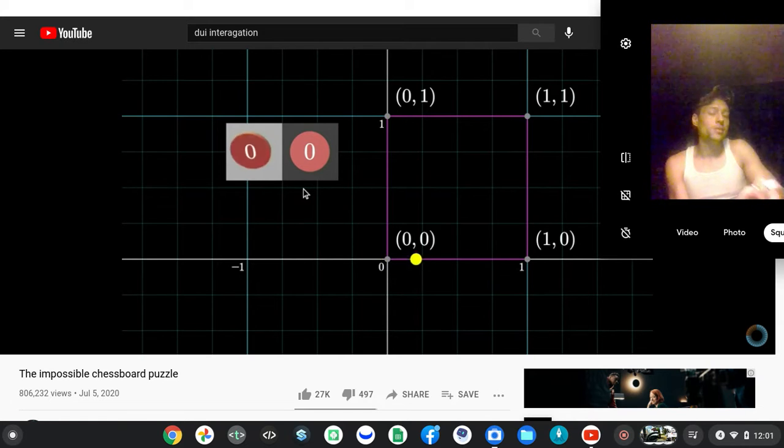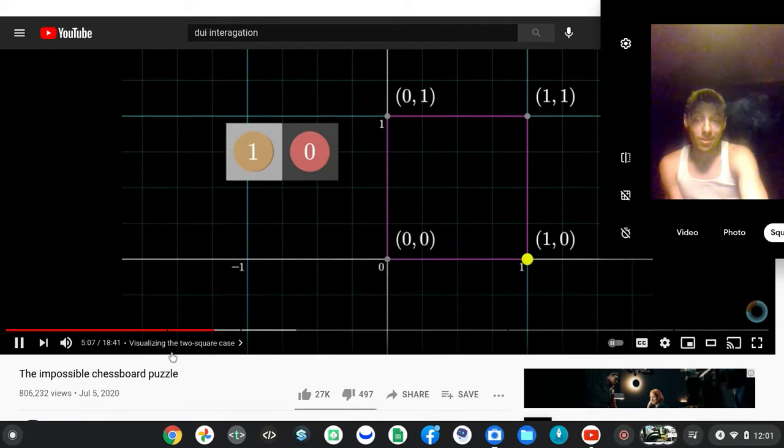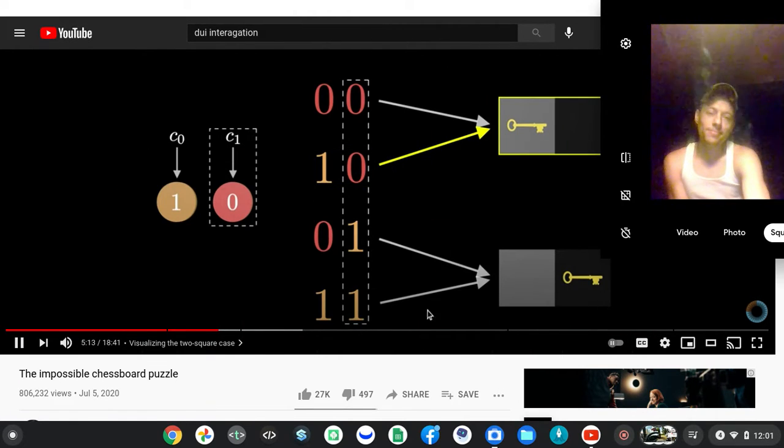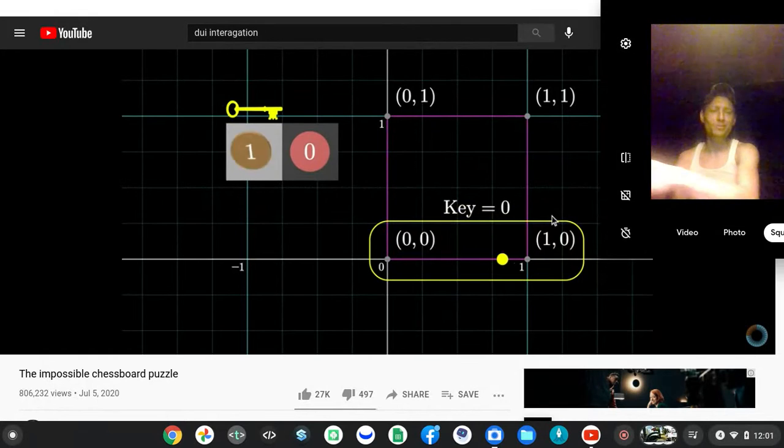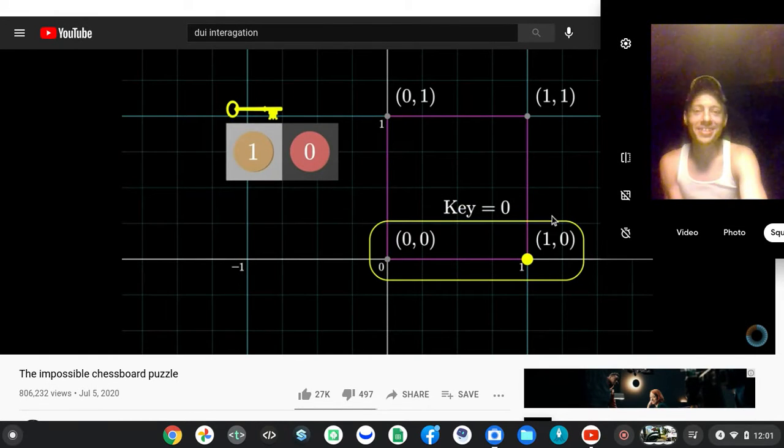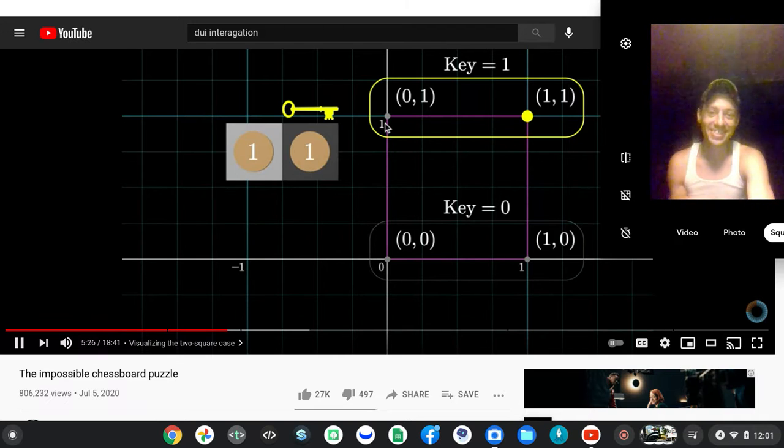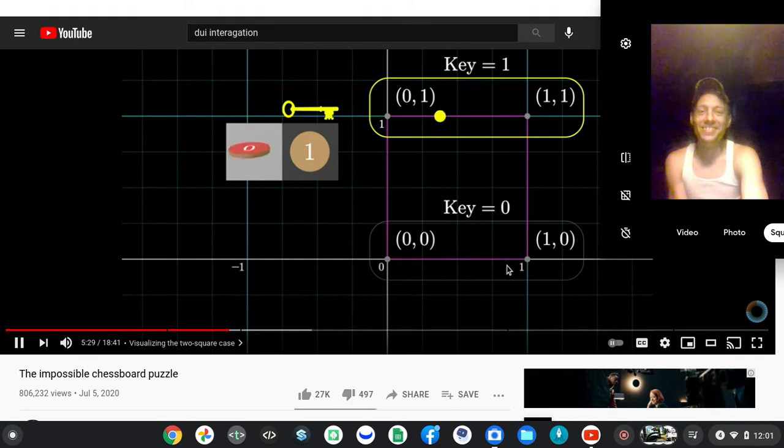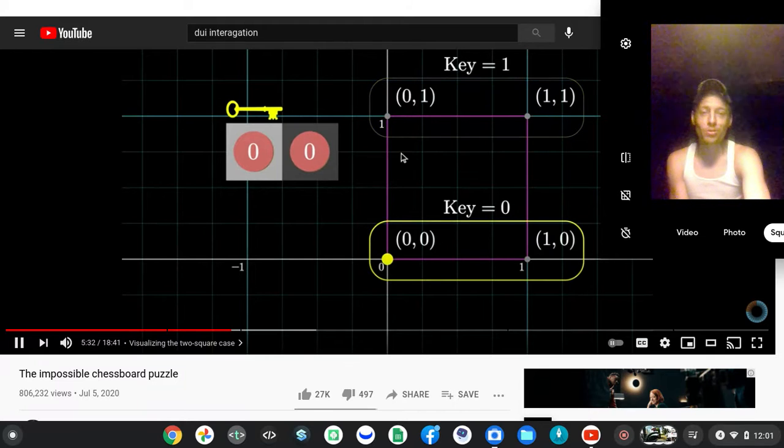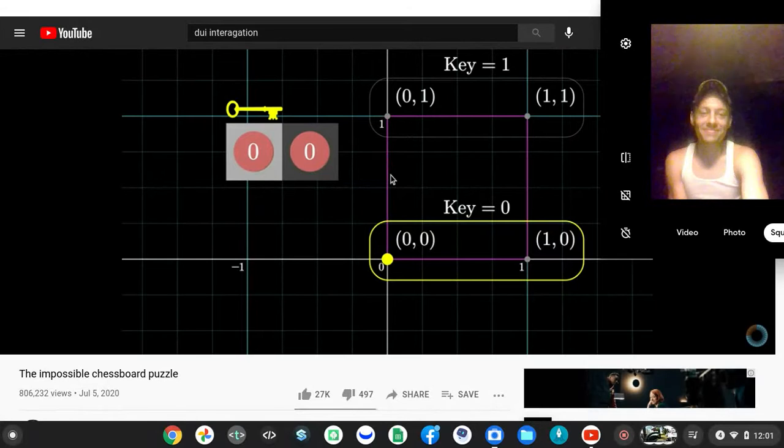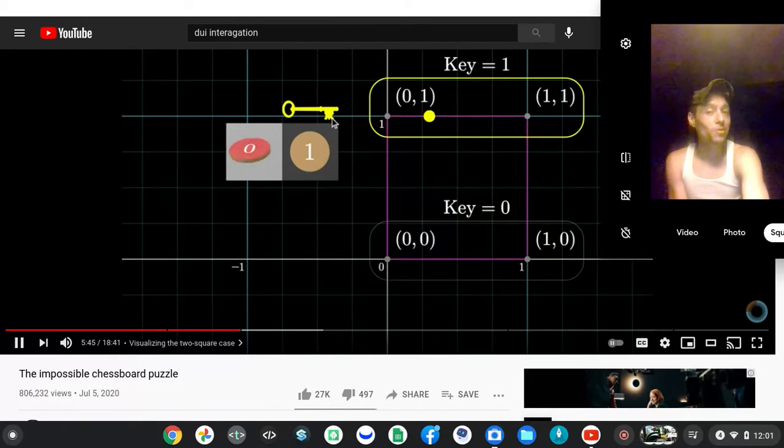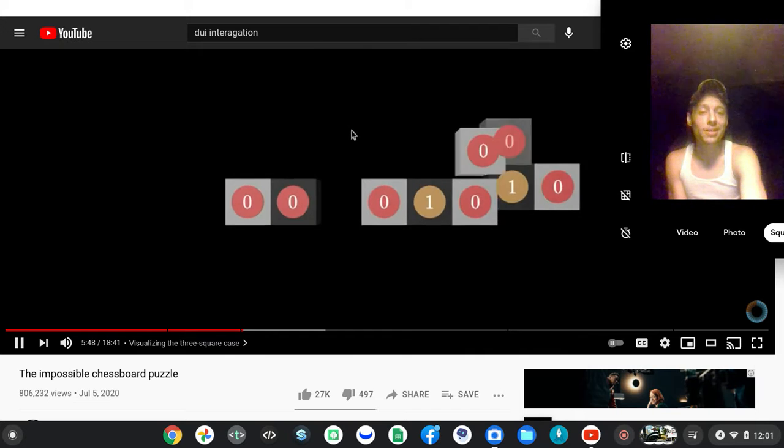Notice, flipping one of the coins moves you along an edge of the square, since it's only changing one of the coordinates. Our strategy of letting that second coin encode the key location could be drawn by associating the bottom two corners, where the y coordinate is 0, with the key is under square 0 state. Which means those top two corners are associated with the key is under square 1 state. So think about what it means for our solution to actually work. It means that no matter where you start, if you're forced to take a step along an edge, forced to flip one of the coins, you can always guarantee that you end up in whichever of these two regions you want to. Now the question is, what does it look like for a bigger chessboard?